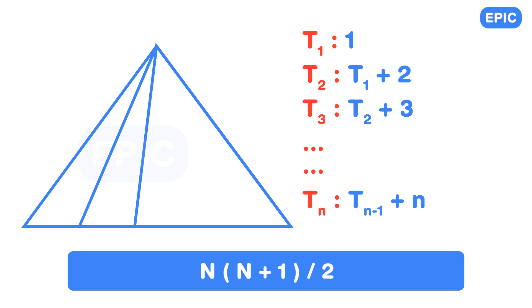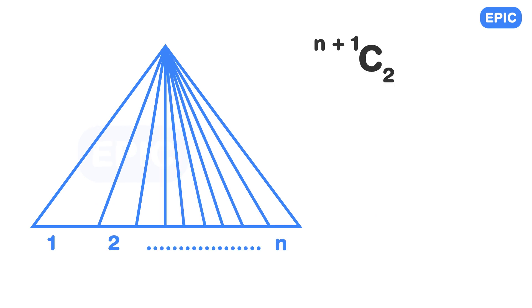Now this sum, n into n plus 1 divided by 2, is also something else. This is n plus 1 choose 2, or total number of combinations of choosing two objects from n plus 1 objects. Is this some random coincidence or both are similar processes?